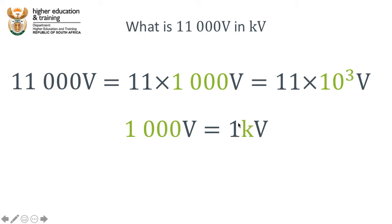But we also know that 1,000 can be abbreviated to this kilo. So a kilovolt is the same thing as 1,000 volts. Well therefore, 11,000 volts is simply 11 kilovolts.